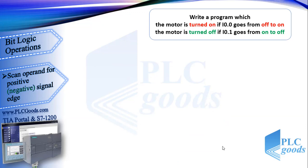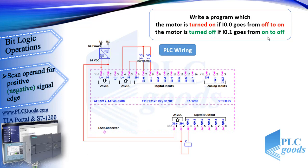Let's write a program which turns on a motor when I 0.0 goes from off to on, and turns it off when I 0.1 goes from on to off. We've written a program to turn on a motor before, but now we want the program to work based on changes in pushbutton states.